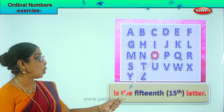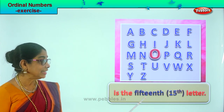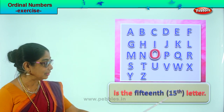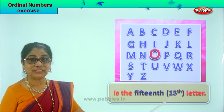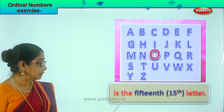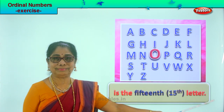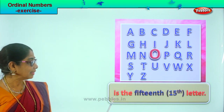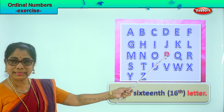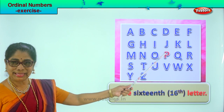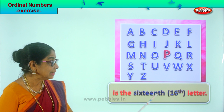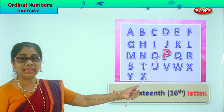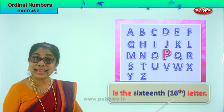After N, O — O is the fifteenth letter. Write fifteen and TH. That's how we write fifteenth. O is the fifteenth letter. Next, P — P is the sixteenth letter. Write sixteen and TH. P is the sixteenth letter.